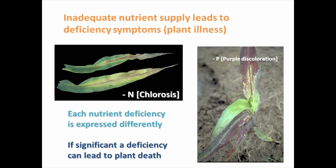If a plant has a purple, stunted look, one possibility is phosphorus deficiency. In turf grass, nitrogen deficiency is common, and we respond with fertilizer applications when the turf begins to yellow. Many crops give us signs that they are deficient in certain nutrients.